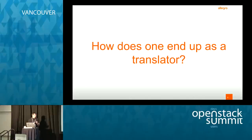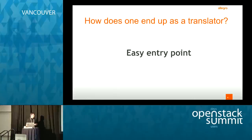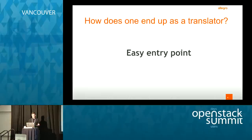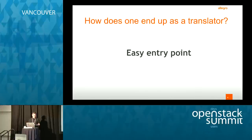So, how does one end up as a translator anyway? First, it's an easy entry point into open source. When you want to start doing open source, providing new software for people, translation is an easy way to get involved. Because if you can read English, you probably can translate it into your own language.